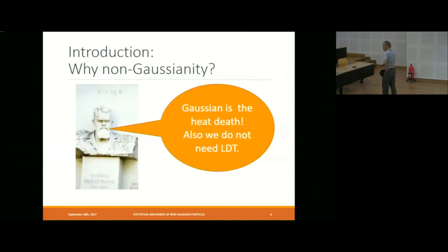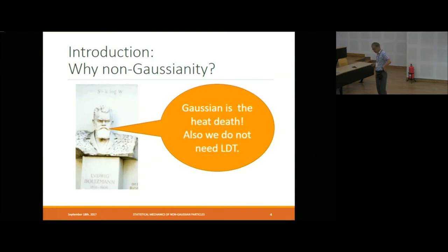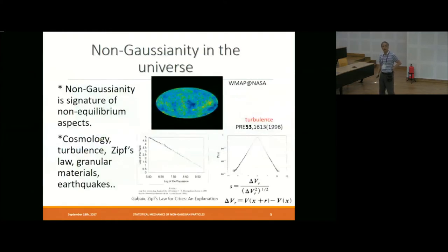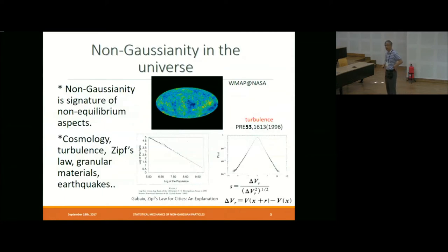So this is Boltzmann. Boltzmann said that Gaussian is a limiting case. So Gaussian is not so good for non-equilibrium statistical mechanics. And also, we don't need a large deviation theory if we are in the world of the Gaussian.